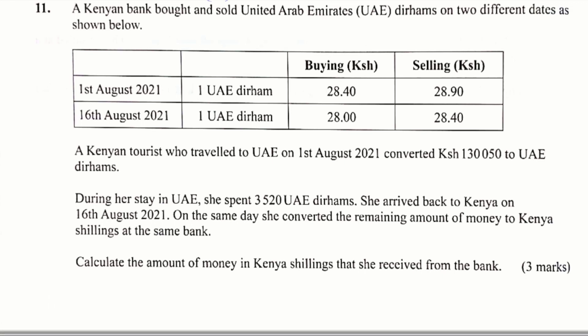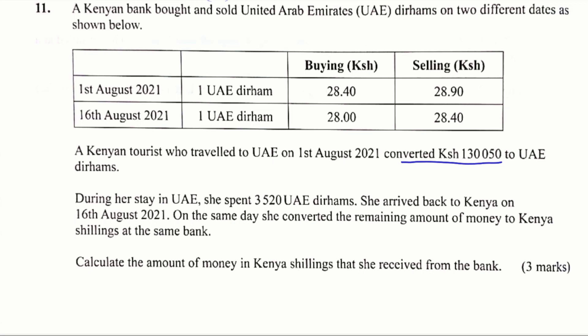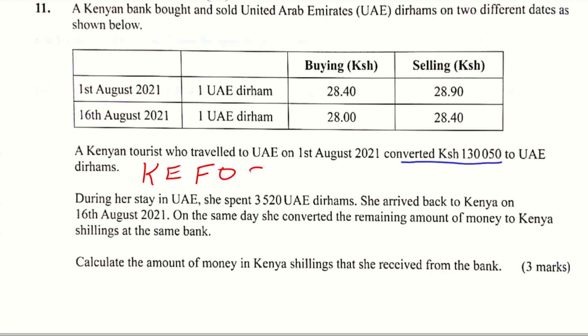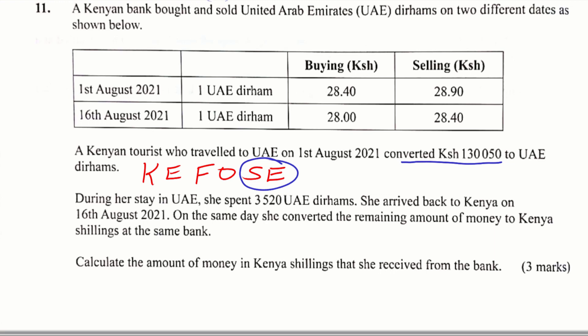Calculate the amount of money in Kenyan shillings that she received from the bank. Let's begin: the tourist converted 130,050 Kenyan shillings to UAE dirhams. This is a conversion from Kenyan money to foreign money. Use this acronym to help: when converting Kenyan money to foreign money, you sell. So in this situation we are going to use the sell column for 1st of August.